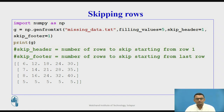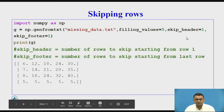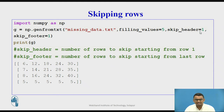If we want to skip rows from the beginning or end of the dataset, we can use the skip_header and skip_footer parameters. skip_header skips the specified number of rows starting from the first row, while skip_footer skips from the last row. Passing skip_header=1 and skip_footer=1 skips the first and last rows, and the output contains only the data from the middle rows.